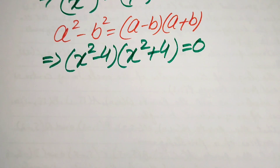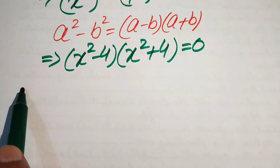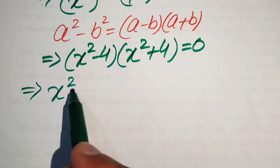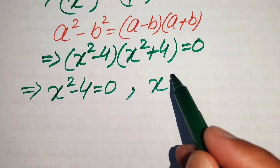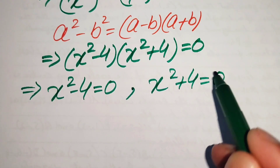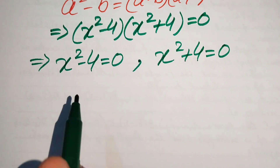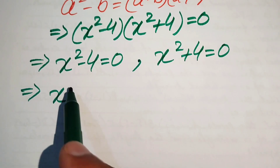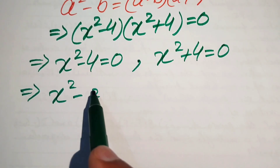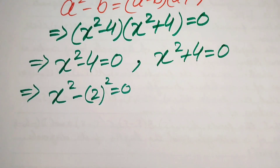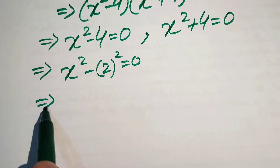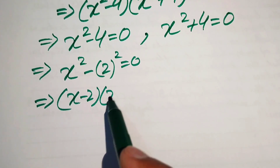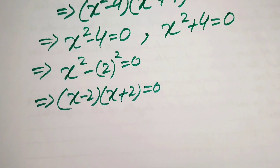We divide into two cases. Case 1: x squared minus 4 equals 0, and Case 2: x squared plus 4 equals 0. In Case 1, we write x squared minus 2 squared equals 0 and apply the difference of squares formula again, giving x minus 2 into x plus 2 equals 0.